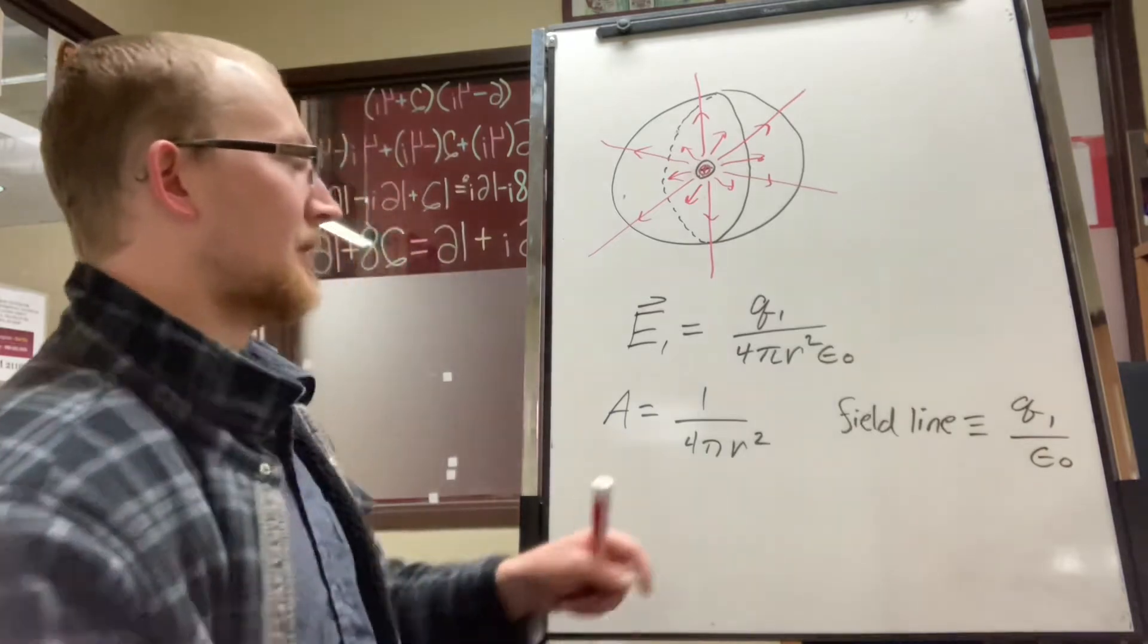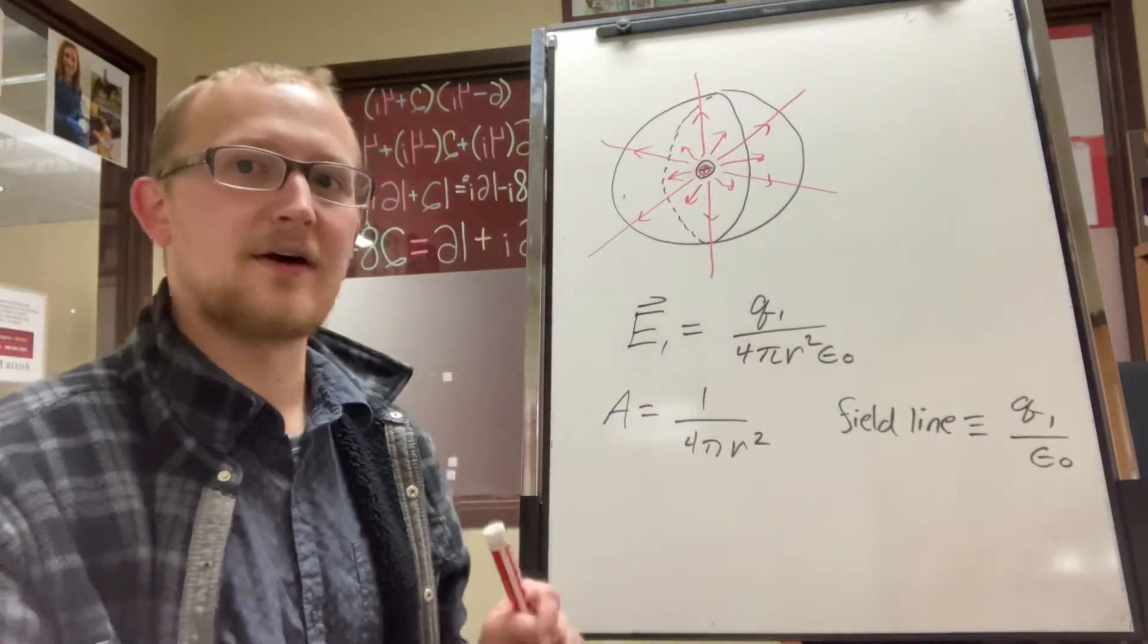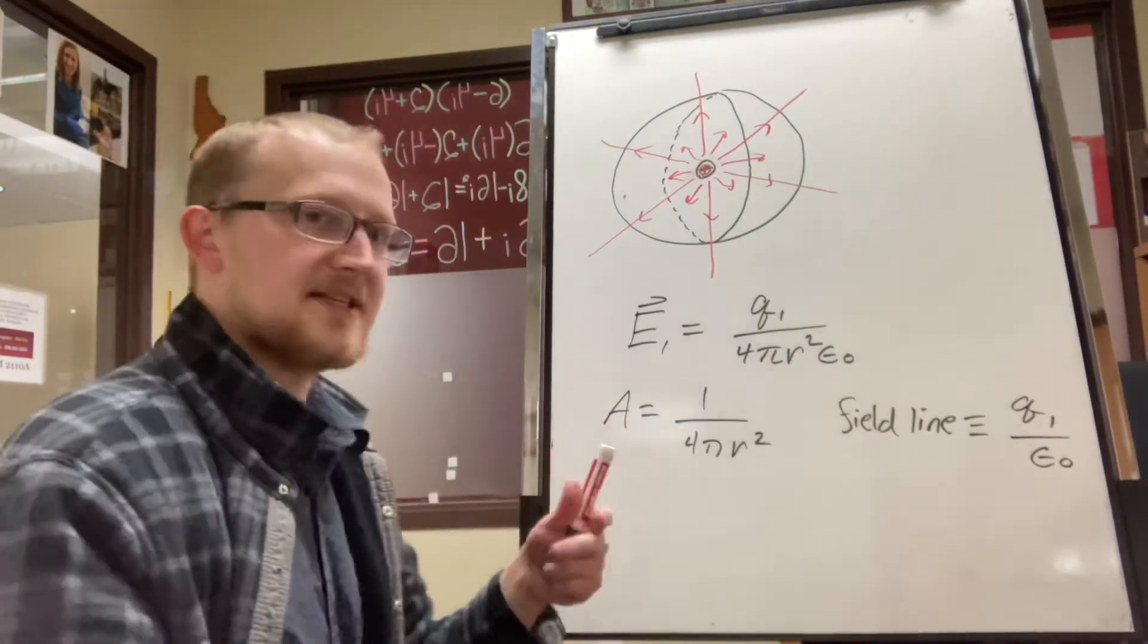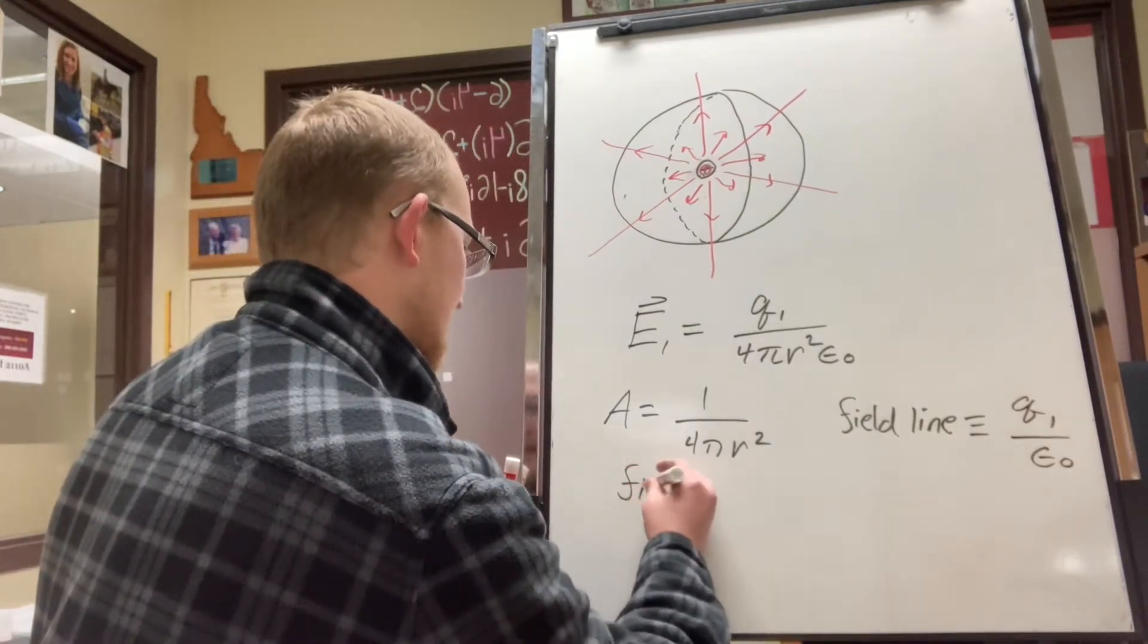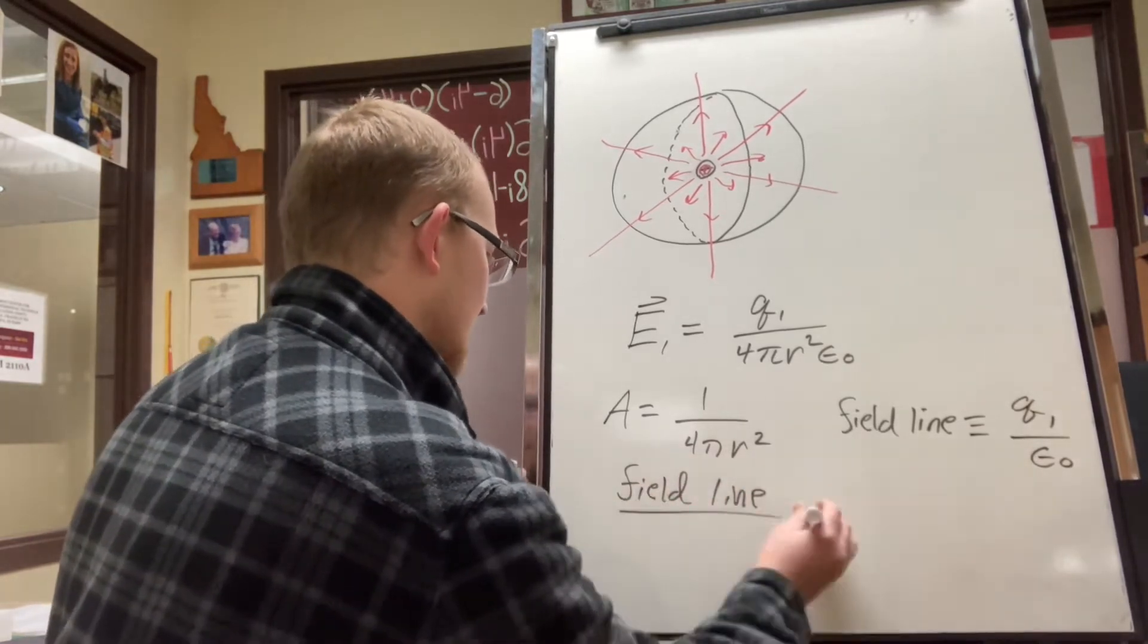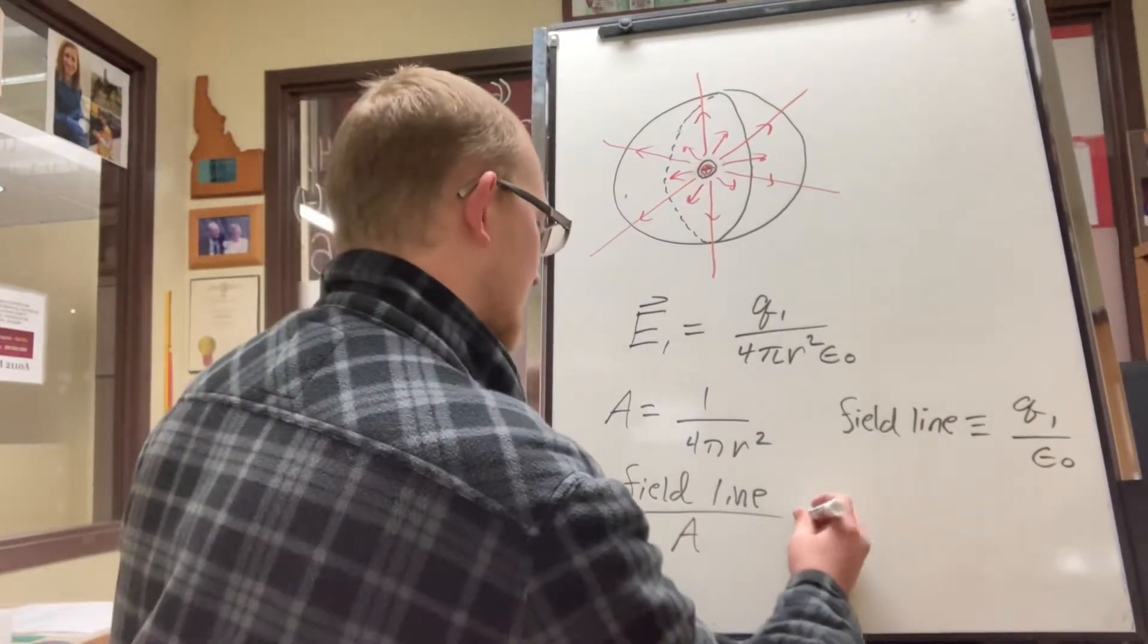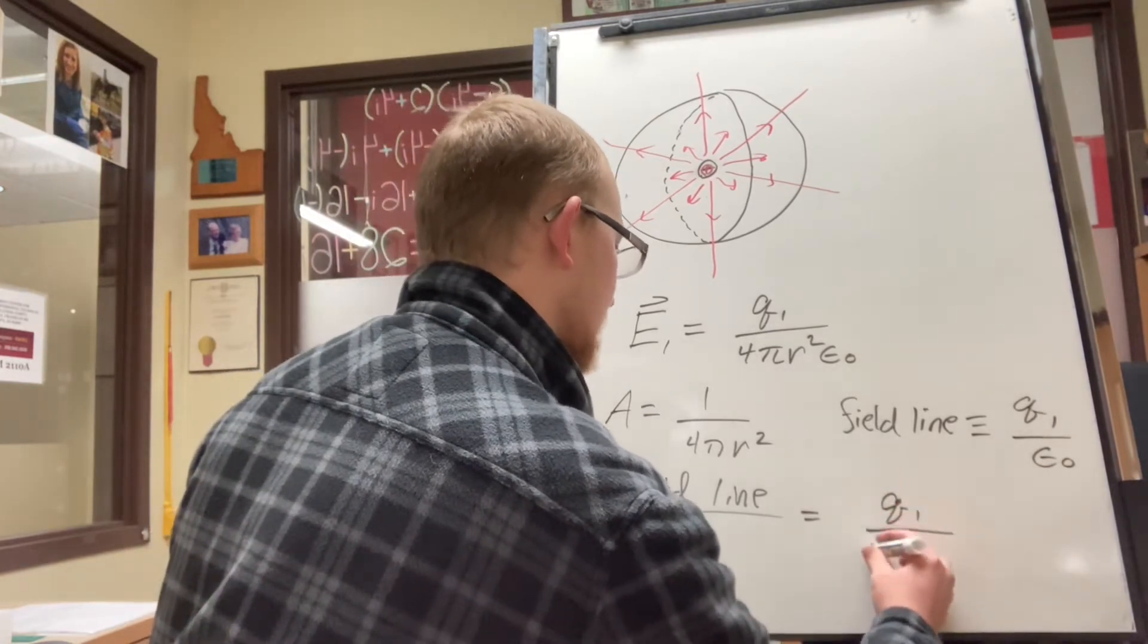So if we're interested in the density of field lines at some given point on the surface, we're going to take the field lines divided by the area. So this is the field line area density. Just like with mass density, we're going to take the quantity that we're interested in finding the density of and divide it by the region of which we are spreading that out on. And so that's going to equal, of course, the E field caused by this charge.